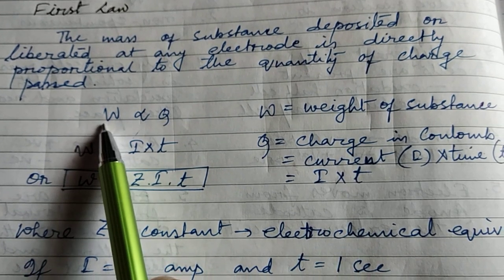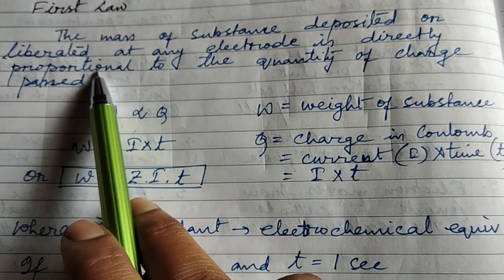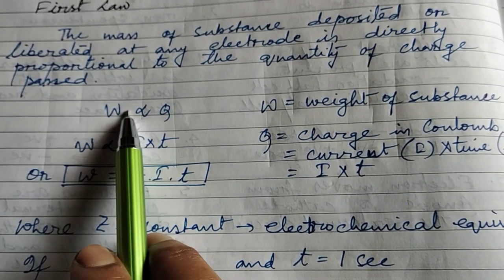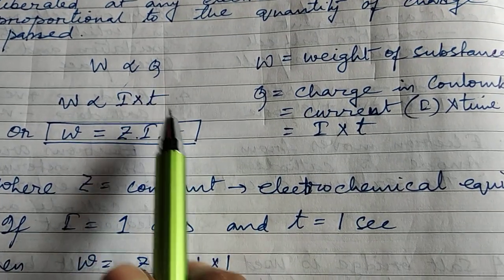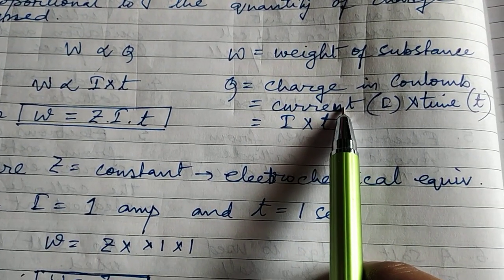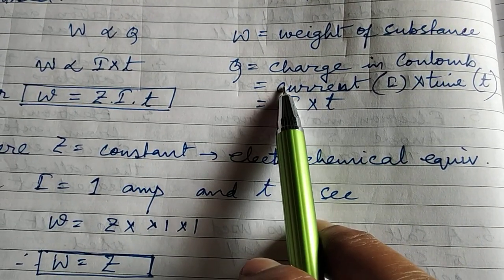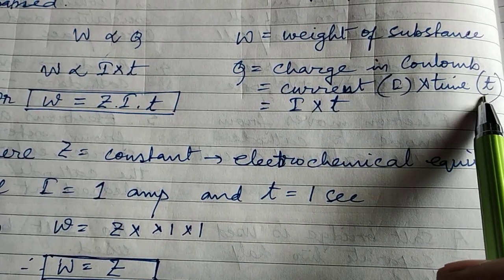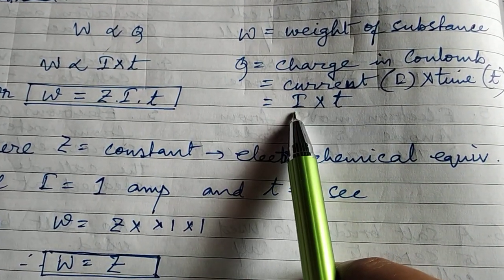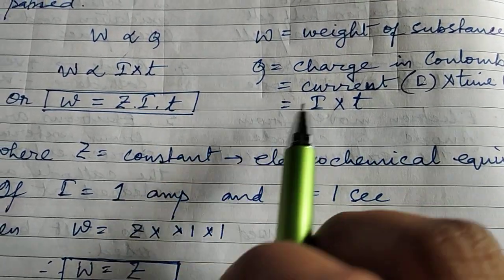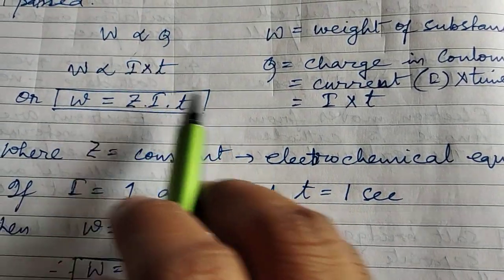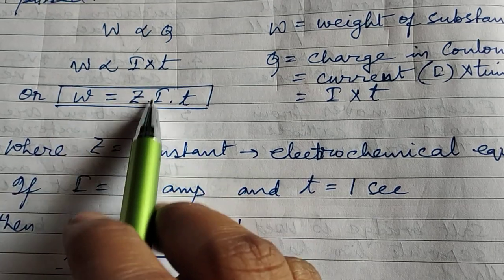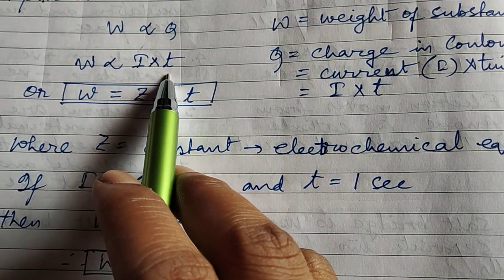W is the weight of substance and charge is equal to Q. According to the first law, W is directly proportional to Q, and Q is charge in Coulombs, which is equal to current multiplied by time — current is I and time is T. So Q is equal to I into T. Replacing Q with I into T, the equation becomes W is directly proportional to the product of I into T.